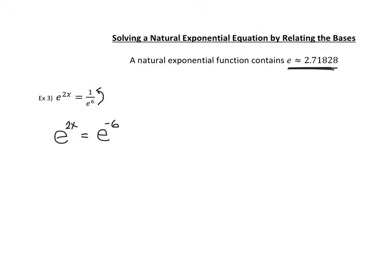Now we're in good shape because we have the same basis. Therefore, we can set our powers equal to each other, which is 2x equals negative 6. That's just an easy equation to solve. We have x equals negative 3.